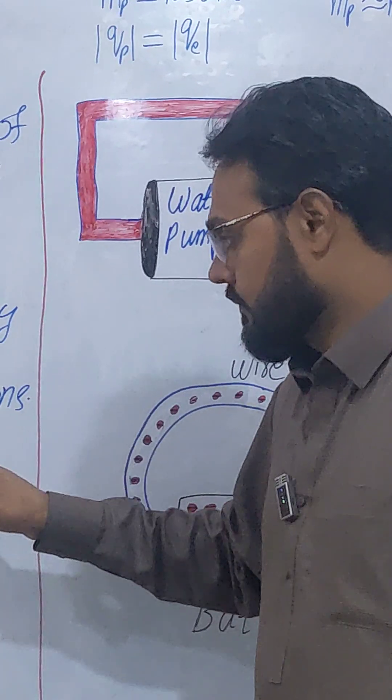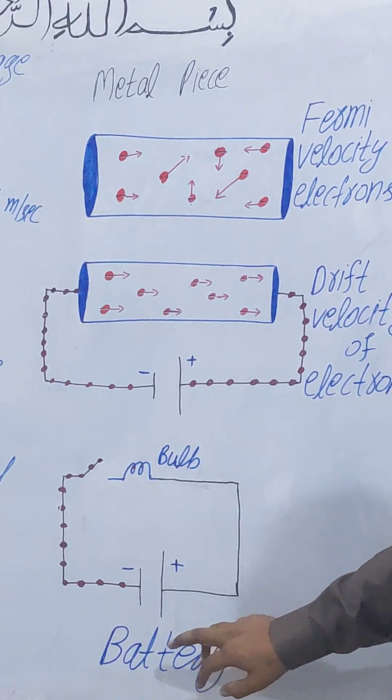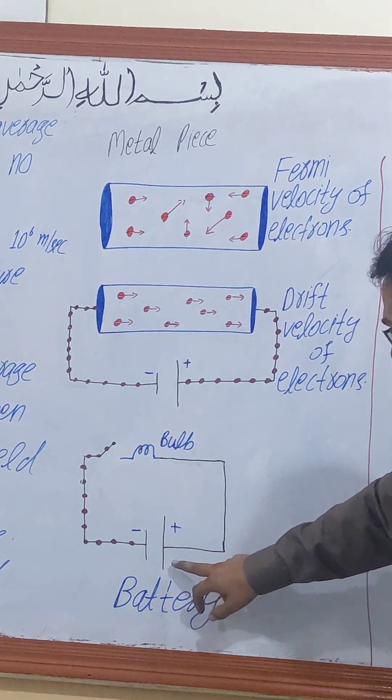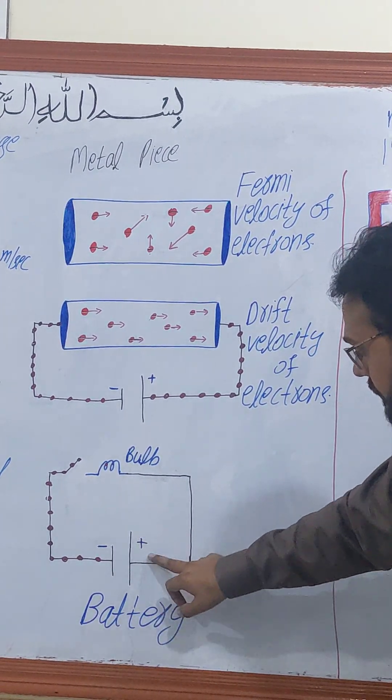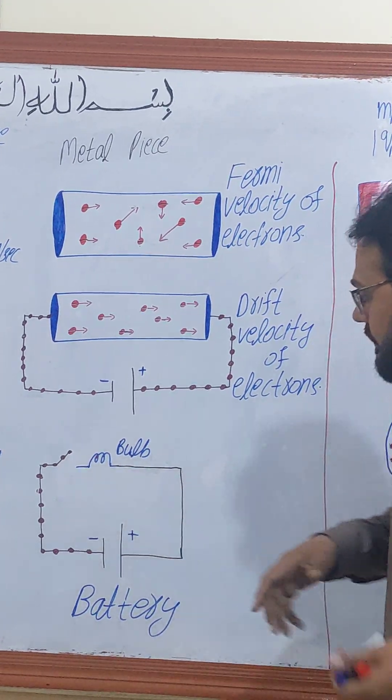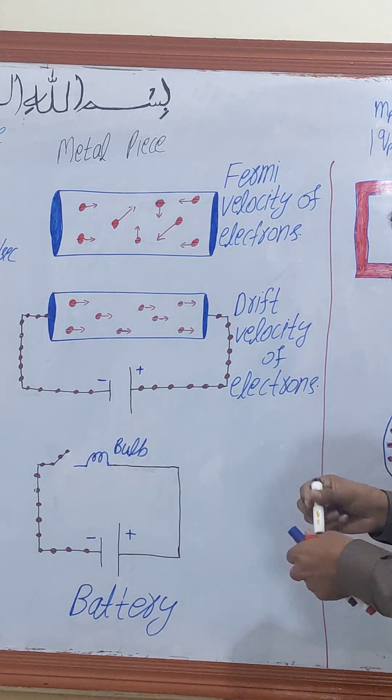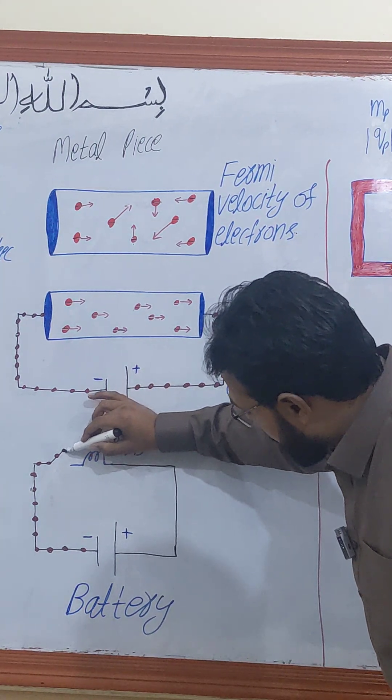Now, the symbol of battery is here. This line shows the negative terminal and this line shows the positive terminal. Electrons flow from negative. It is a switch. Now the switch is turned off. I will turn on the switch.